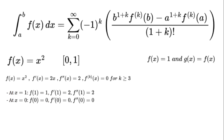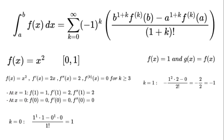Calculate the terms. For k equals 0: (1 to the power of 1 times 1 minus 0 to the power of 1 times 0) over 1 factorial equals 1. For k equals 1: negative 1 squared times 2 minus 0 over 2 factorial equals negative 2 over 2 equals negative 1. For k equals 2: 1 cubed times 2 minus 0 over 3 factorial equals 2 over 6 equals 1 over 3.